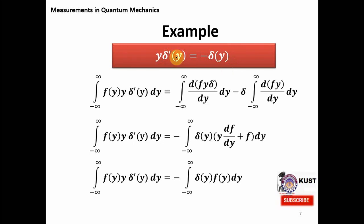In this lecture we have seen that measurement in quantum mechanics is quite different from classical mechanics. Here, measurement actually shifts the state of a system to a new state, and the new state is defined by the eigenvalue coming from the operator. Thank you very much.